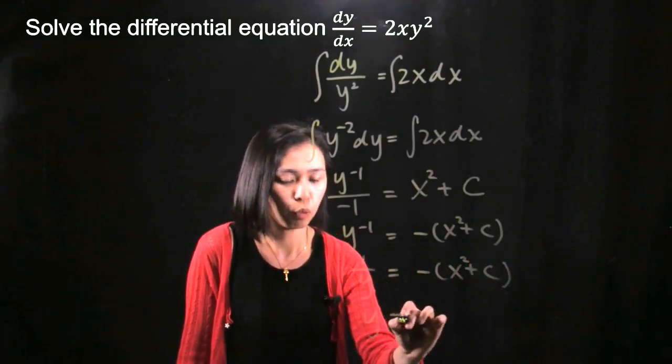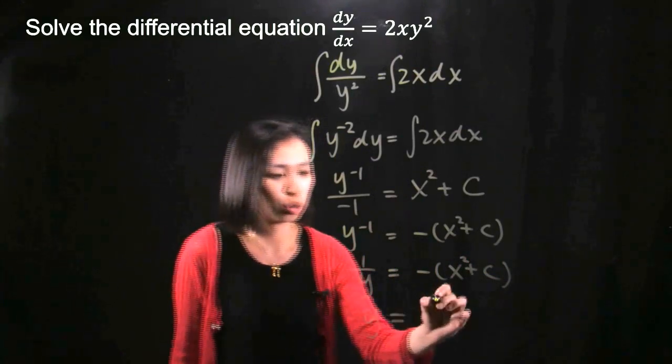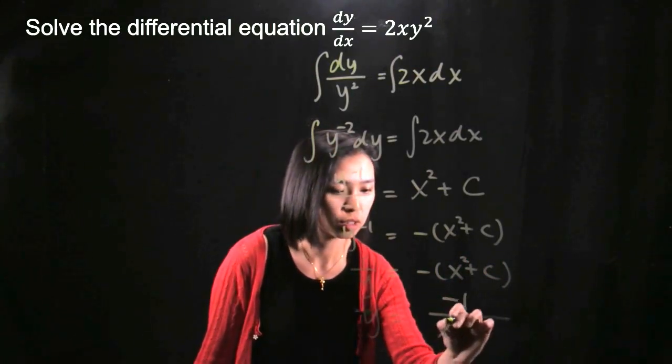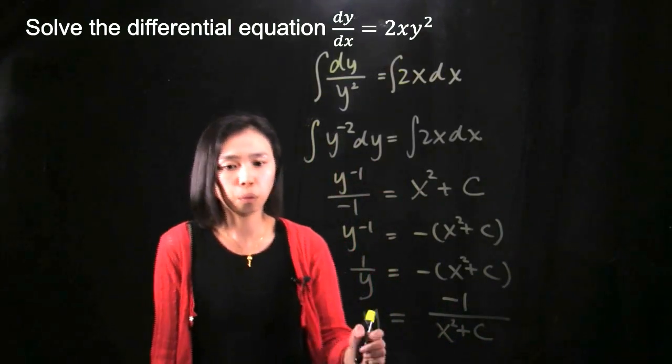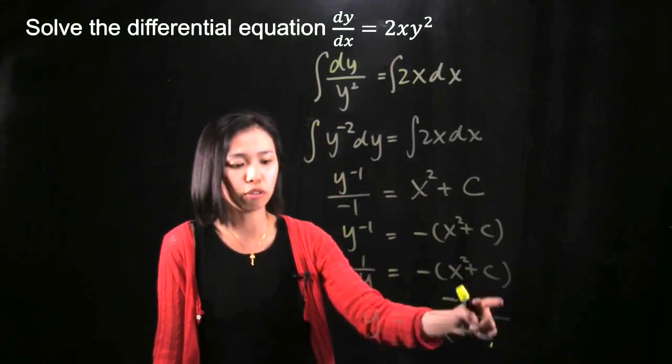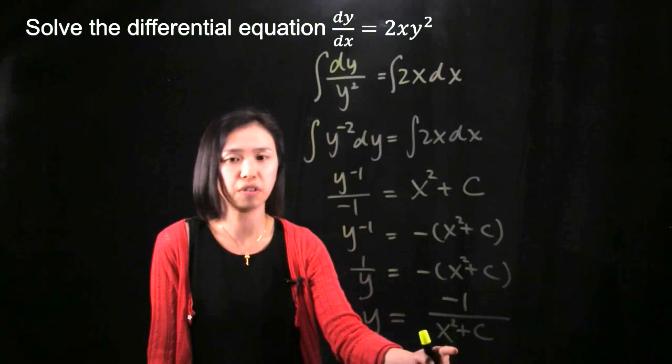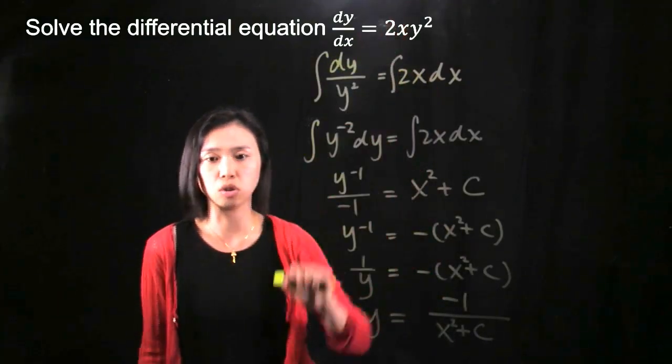And then at the end, we will have y is equal to negative 1 divided by x squared plus c. What we're trying to do here is find a formula y in terms of x which satisfies this differential equation.